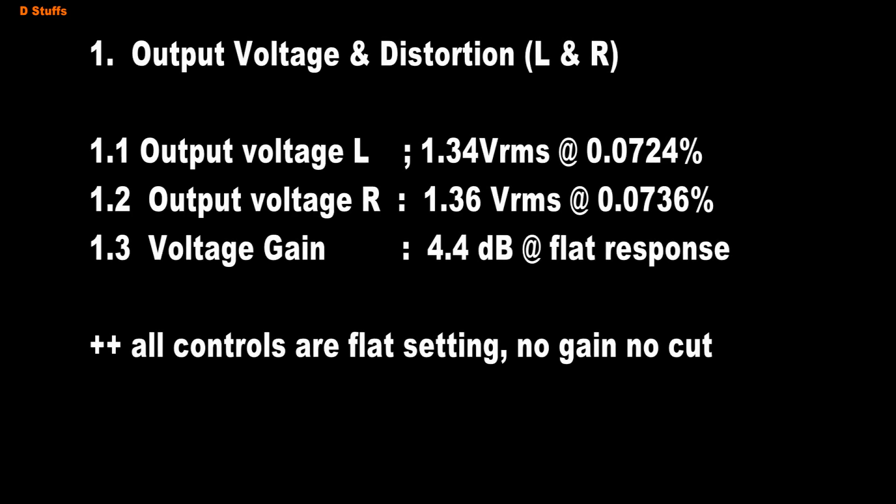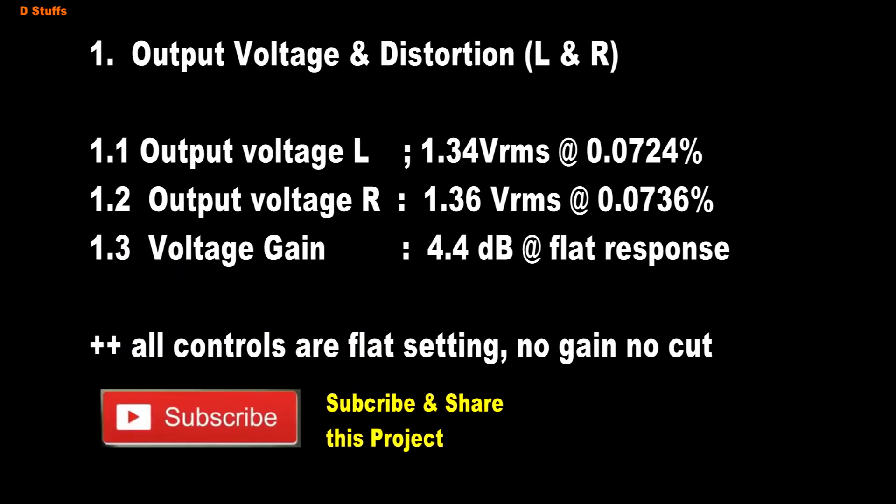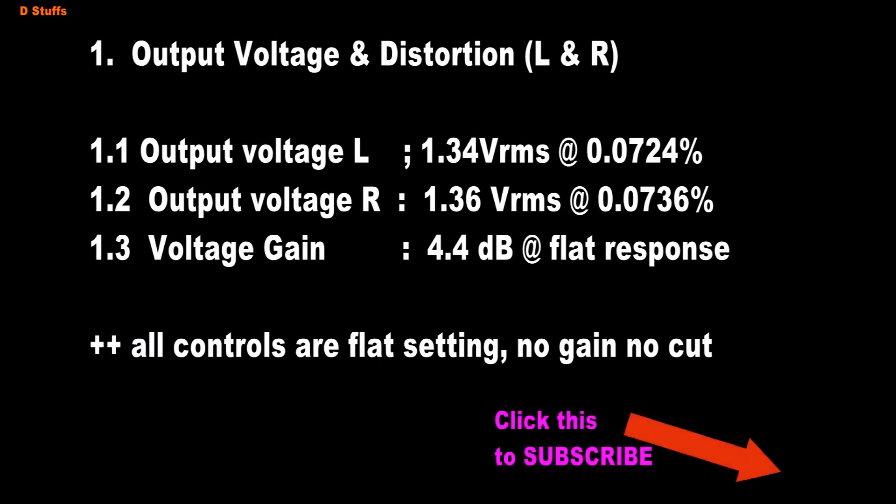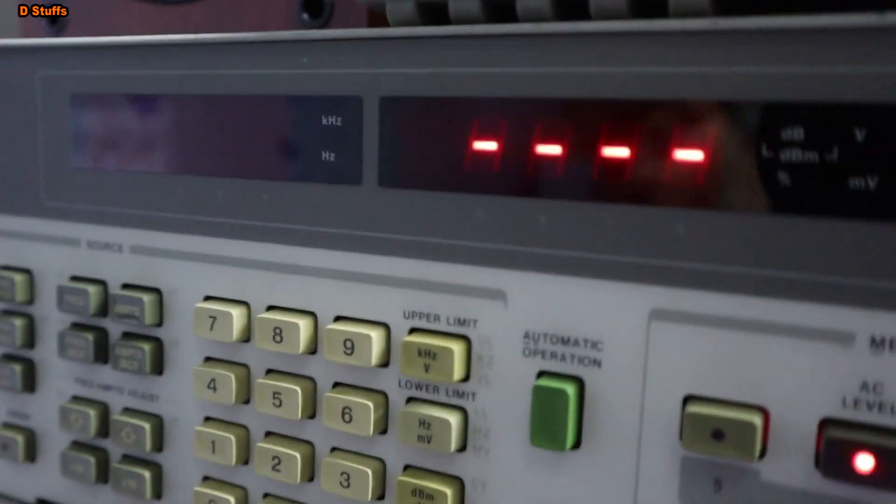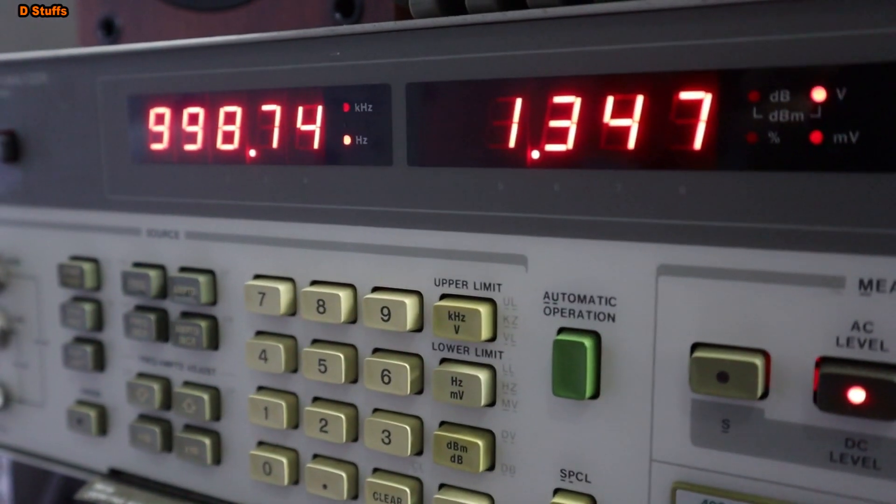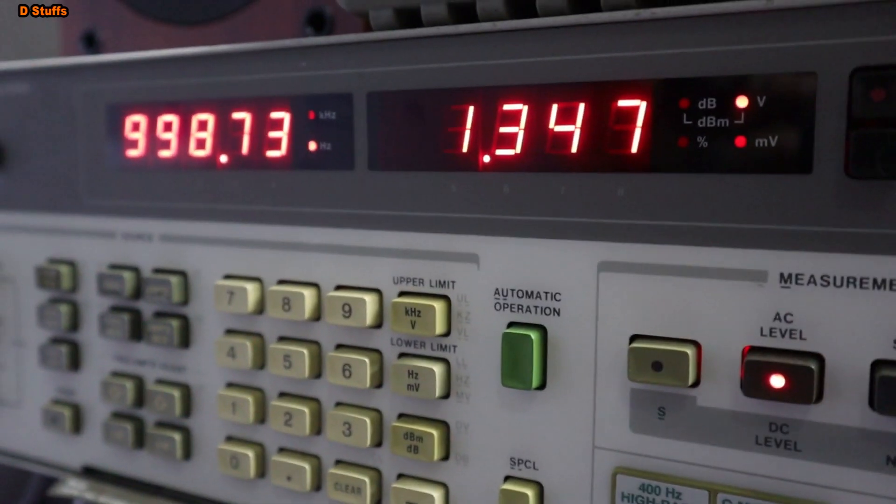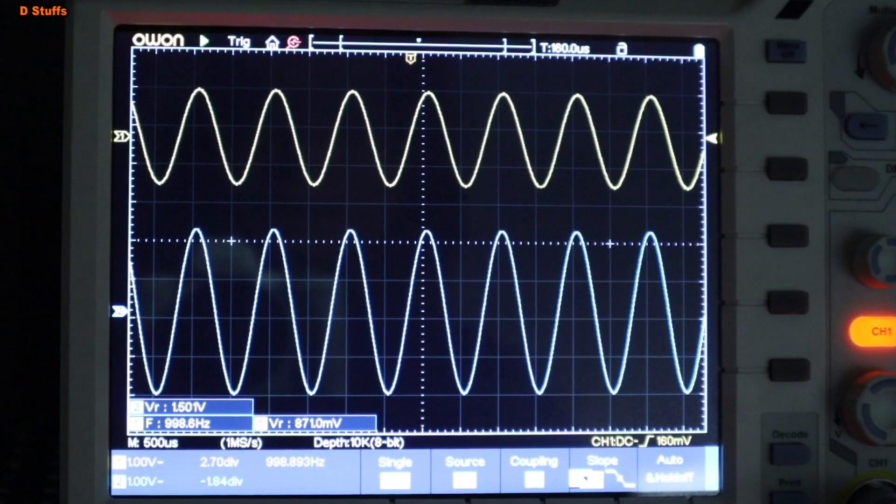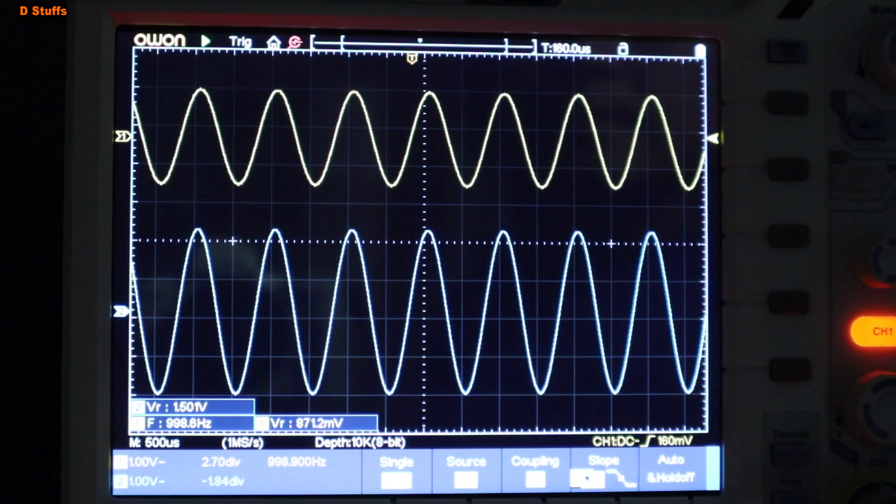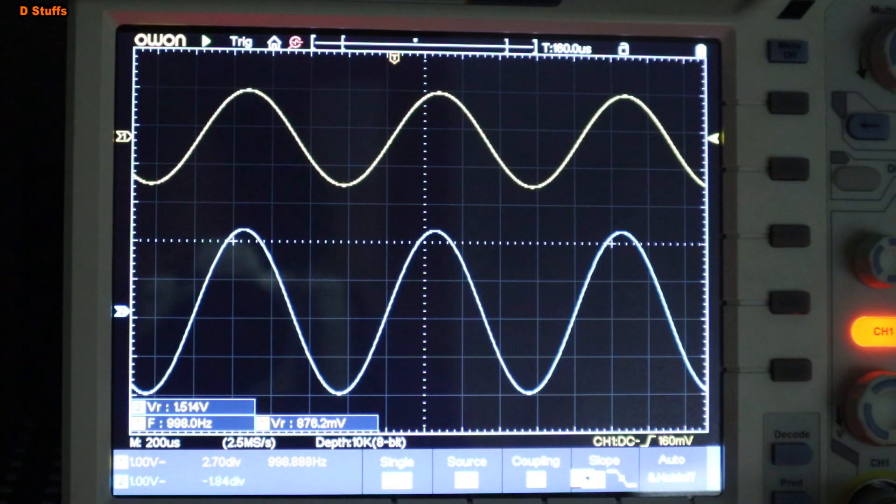So, we got the data. The voltage swing of the output is about 1.34 V RMS. That is, the voltage gain will be about 4.4 dB. That means the input is 800 mV and the output is 1.34 V RMS, which is good enough without losing signal in the tone control processing.